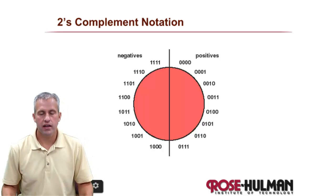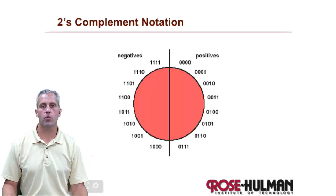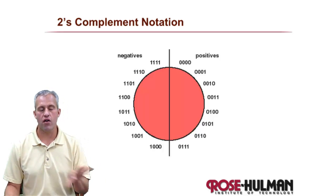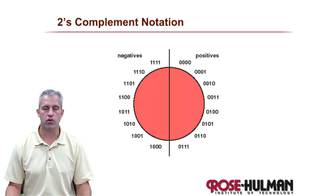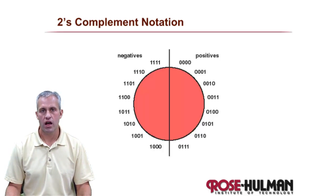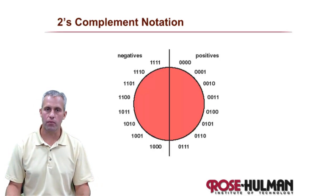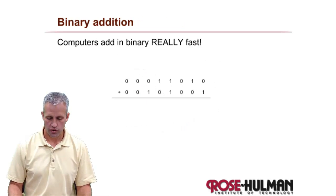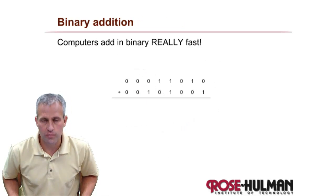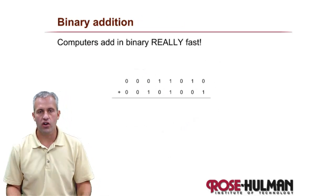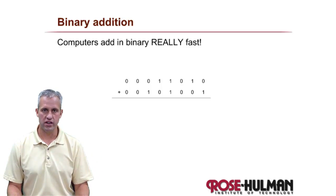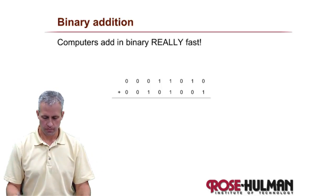Welcome back again. This time what we're going to talk about is how negative numbers are represented in a computer. It's a mechanism called two's complement notation. So let's go ahead and set the stage a little bit, and talk about how computers do addition first.